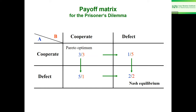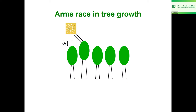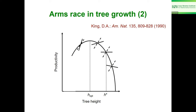The Nash equilibrium is stable with respect to unilateral change: if only one player changes, their payoff decreases (from 2 to 1). Only if both change simultaneously does payoff increase, but that requires coordination. An analogy is tree height: there is an optimal height, but if one tree grows taller it gets more sunlight and gains an advantage, so others also grow taller, until none has an advantage but all are above the individually optimal height. The Nash equilibrium is thus suboptimal for the group.